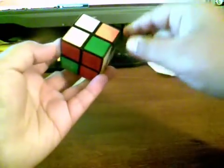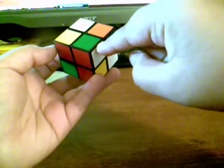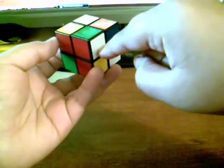Alright. So first, just find the corner that you want to start off with. For instance, I'm using green, red, and white.